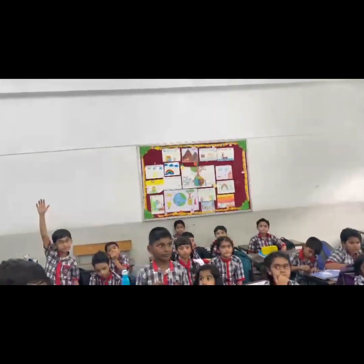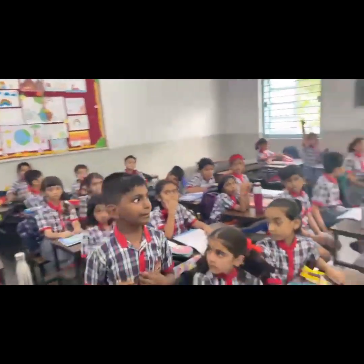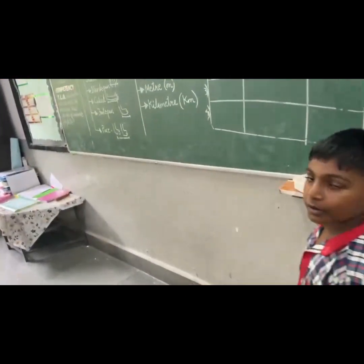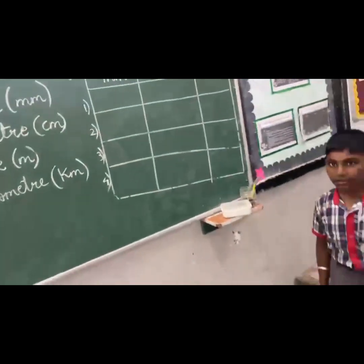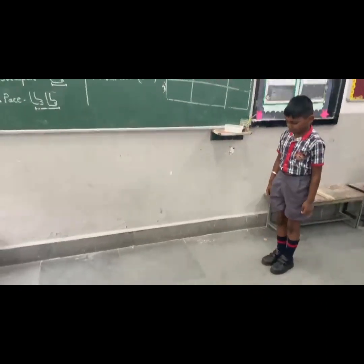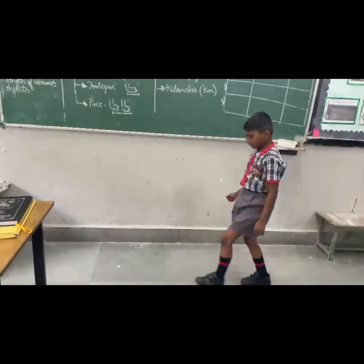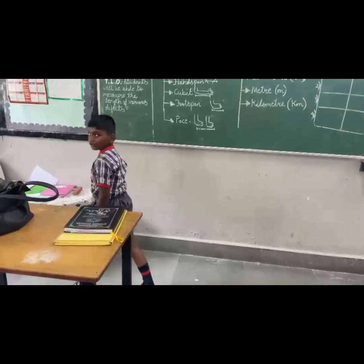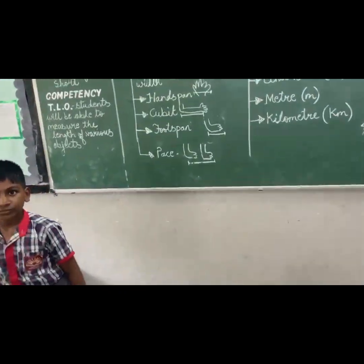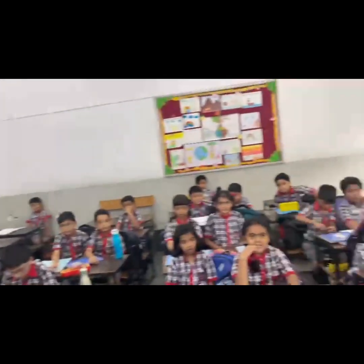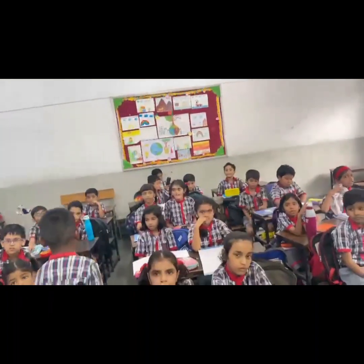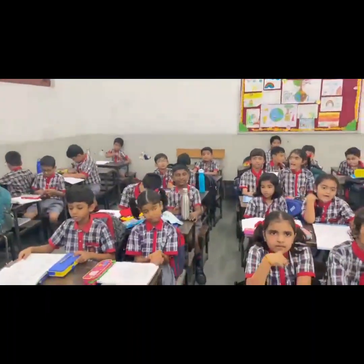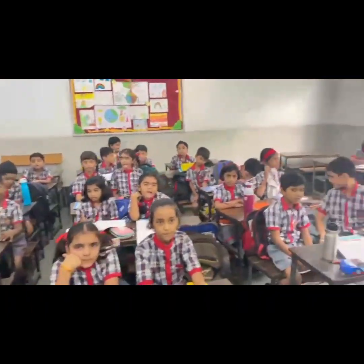Okay, now come, Vedansh. You have to calculate the length of the green board by pace method. 1, 2, 3, 4. So 4 paces. I think everyone has understood properly. Everyone has understood? Yeah.